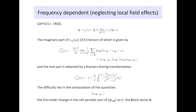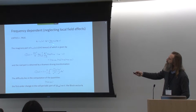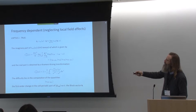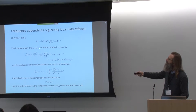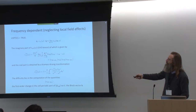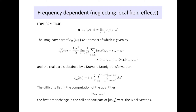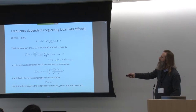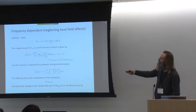How do we do this in the code for LOPTICS=.TRUE.? We compute the imaginary part of this tensor directly from the cell-periodic parts of the Kohn-Sham orbitals, and then do a Kramers-Kronig transformation to get the real part. The computational effort lies in computing these functions. In the Q going to zero limit, we need the change in these orbitals — we need them at an infinitesimally small vector away from our Bloch vector. So we compute the first-order change in the cell-periodic part of our Bloch functions, and we do this in perturbation theory.